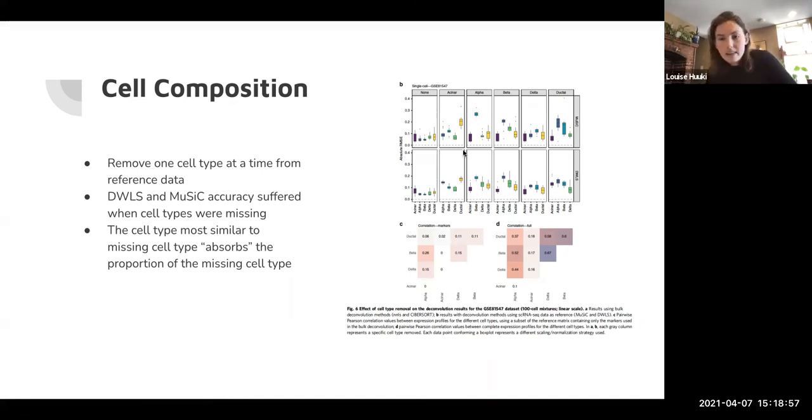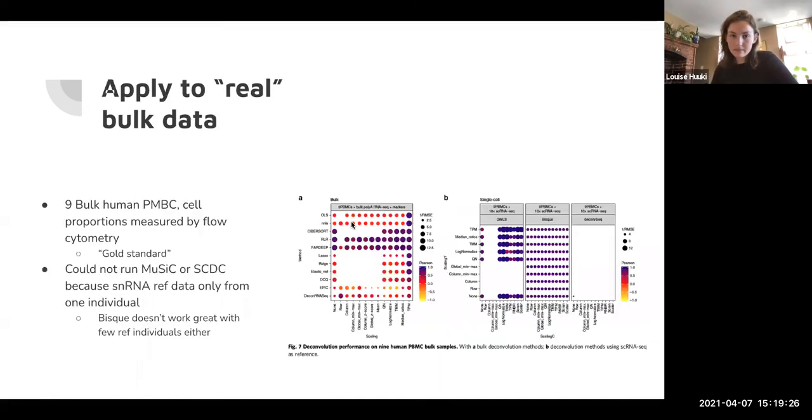They also mentioned, which I thought was interesting, that the cell type that is most similar to the missing cell type can absorb the proportion of that missing cell type. That's what they're trying to get out with these correlation graphs down here. So cell types with high correlation—like beta and delta have a pretty high correlation here—when we knock out the beta cell, I think delta jumps way up from where it is here. So that's something interesting. I think that's something we're going to have to be careful with with our own data.